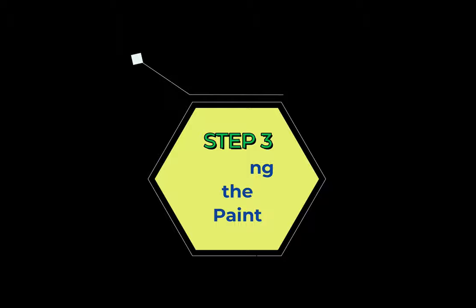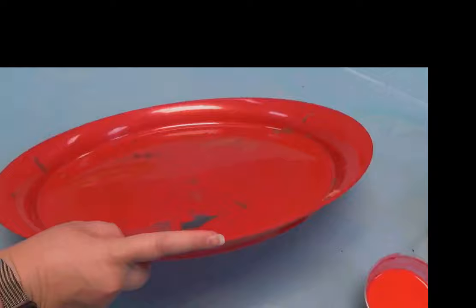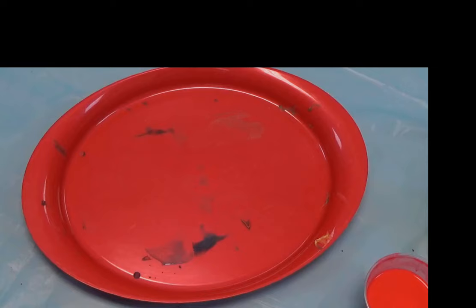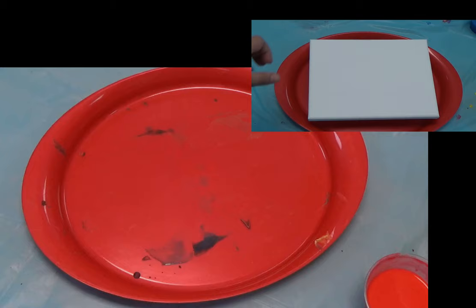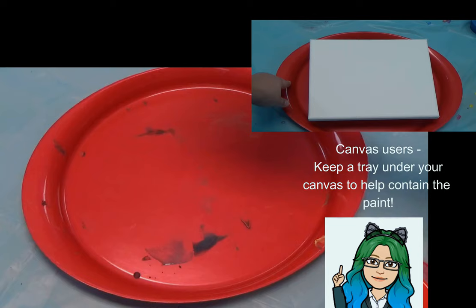Step three, pouring the paint. For this next step you will need a tray or a baking sheet with a lip on it or you will need a blank canvas. The instructions and process is nearly the same for both but the end result is very different. So I would recommend you try both if you are able to.